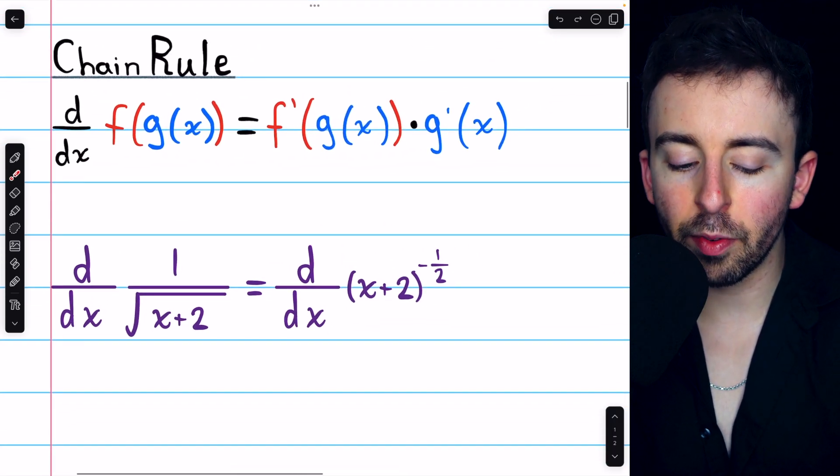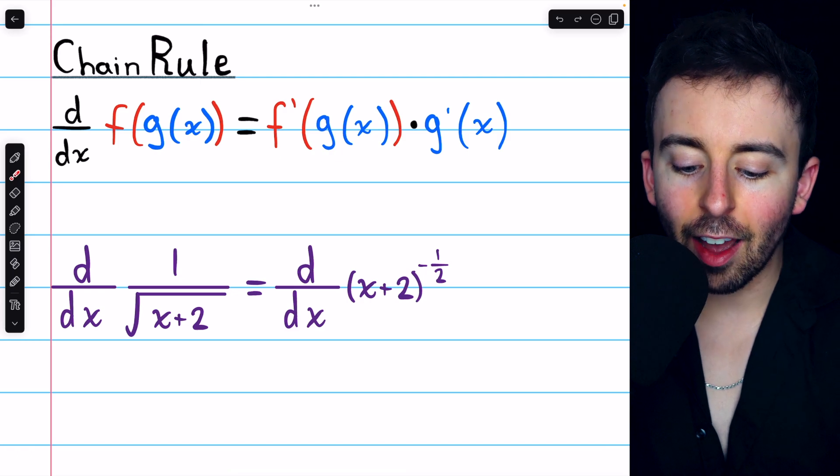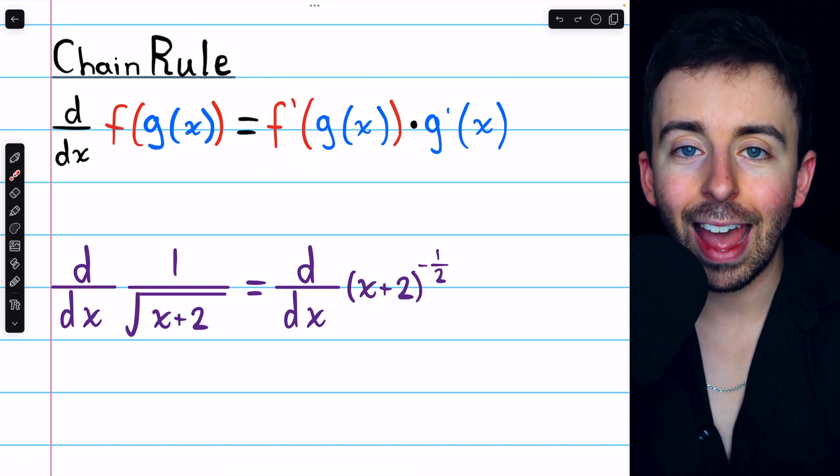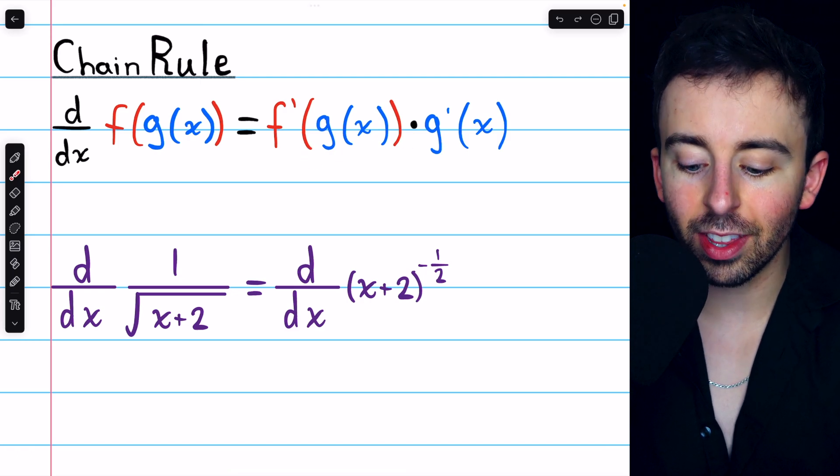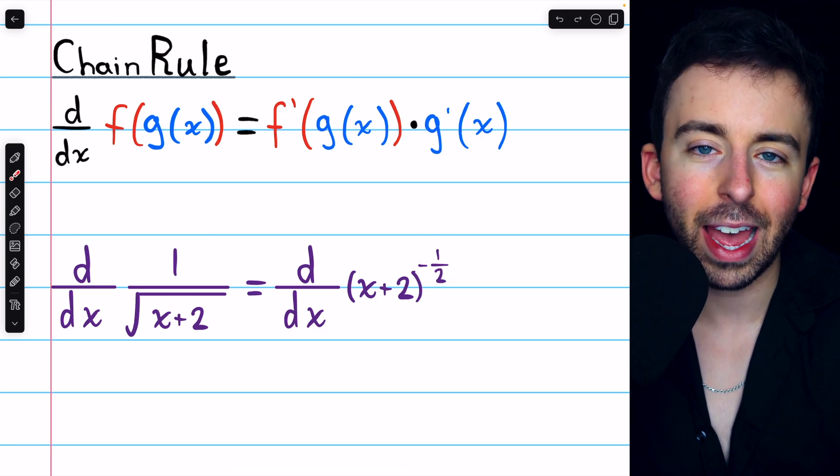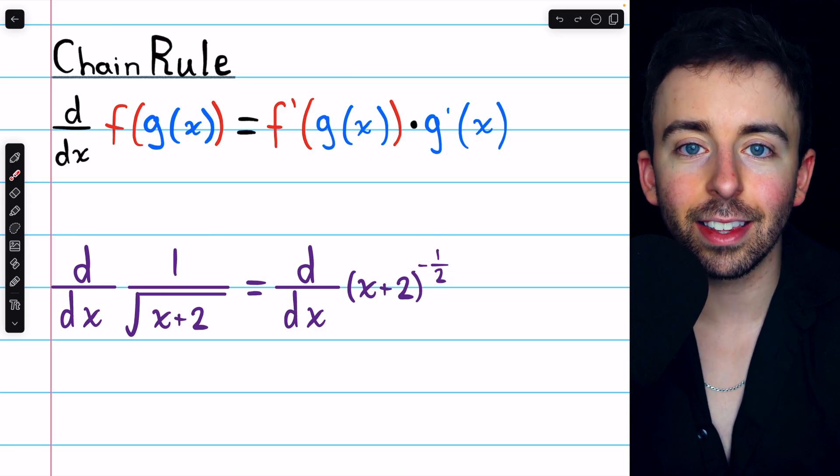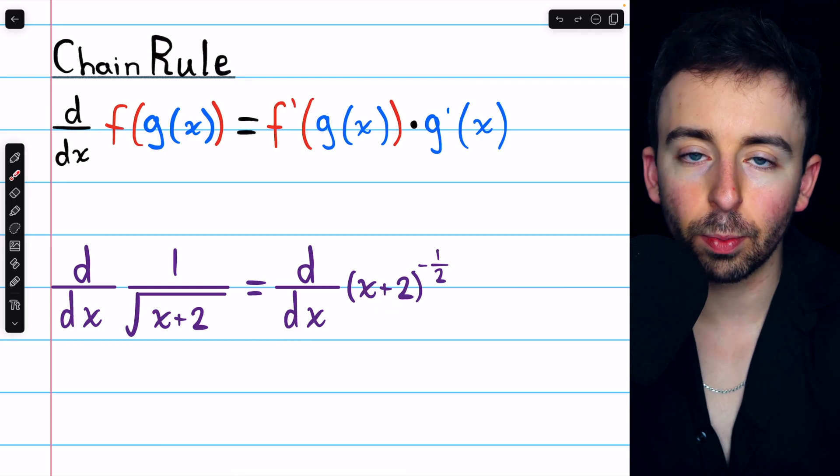which tells us the derivative of f of g is f prime of g times g prime. f is the outside function, which in this case is that power of negative half, and g is the inside function, in this case x plus 2.